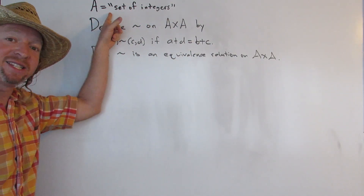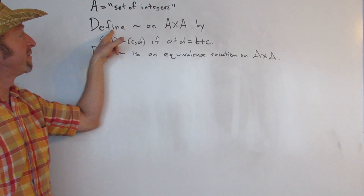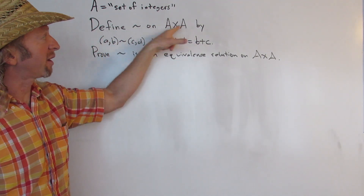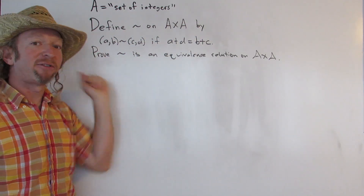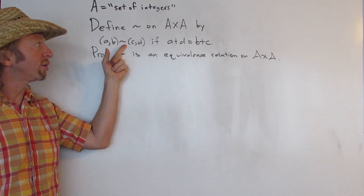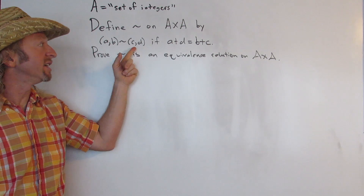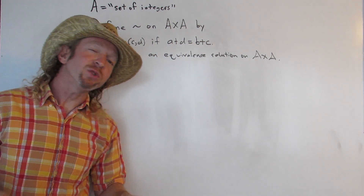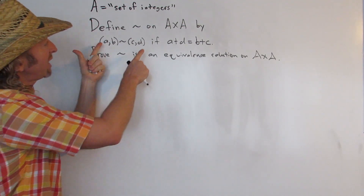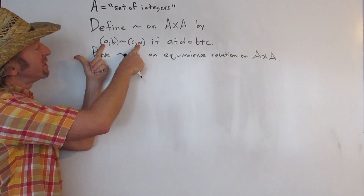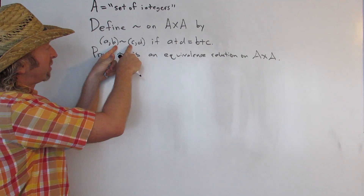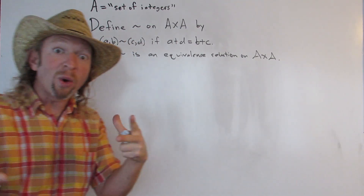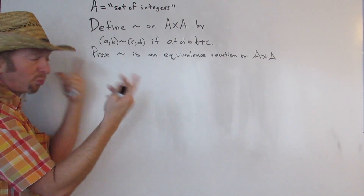In this problem we have a set of integers, and we're going to define a relation — we're calling it twiddle — on the Cartesian product, so A cross A, by the following. We say AB twiddle CD, or AB is related to CD, if A plus D is equal to B plus C. A nice way to think about this is that we're adding the outer elements: the sum of the outers is equal to the sum of the inners.